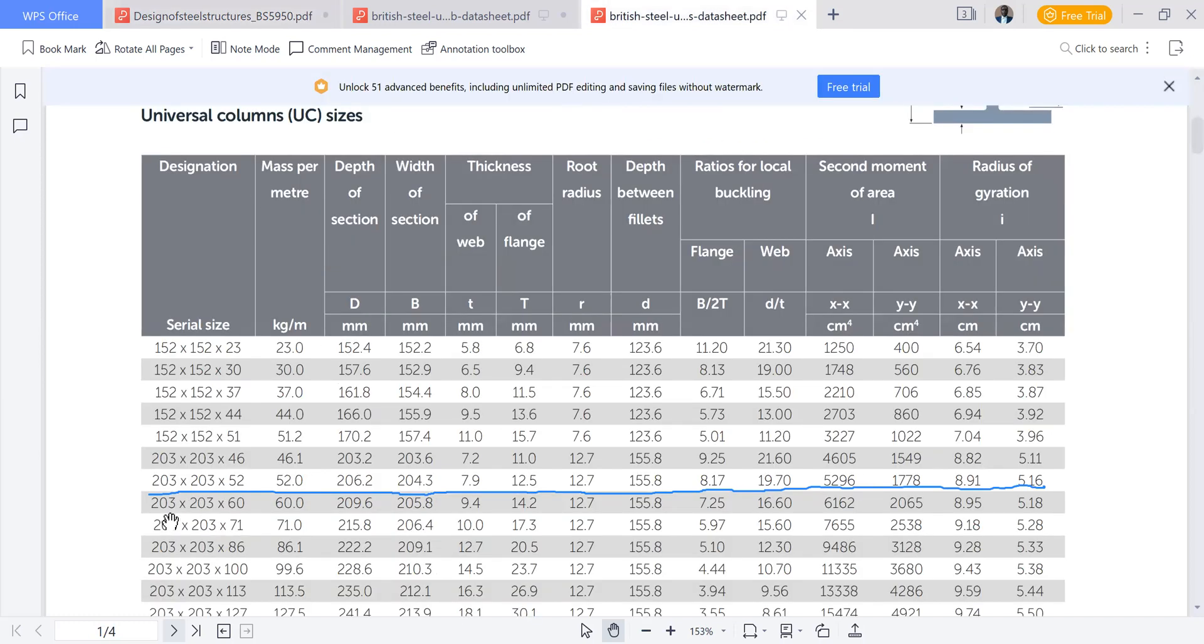Our column is 203 by 203 by 52. Now looking at it on the description of columns, you have depth of section, width of section, up to radius of gyration. Our properties of interest are capital D, capital B, small t, capital T, small d, and b over 2t.